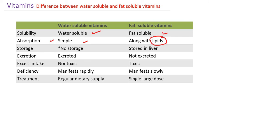Since water-soluble vitamins are water-soluble, they are easily excreted in the urine, so there is no storage. There is an exception: a small amount of vitamin B12 can be stored in our body. But generally, water-soluble vitamins are excreted in urine — if you take excess amounts, they are excreted. Whereas fat-soluble vitamins, since they are not soluble in water, are not excreted in the urine. They are stored in the liver and other tissues.